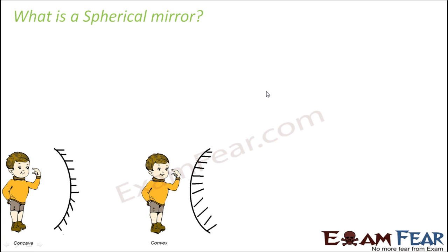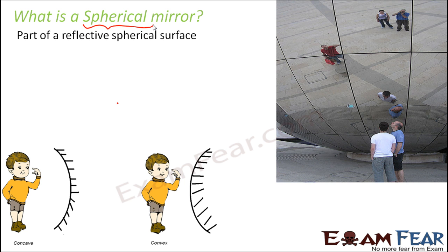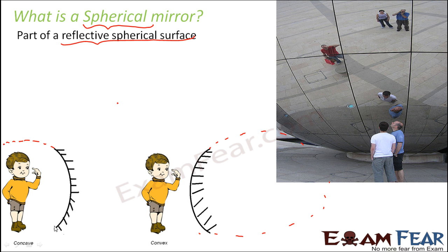So what is a spherical mirror? The word 'spherical mirror' defines itself — spherical means something derived from a sphere. Basically, a spherical mirror is a part of a reflective spherical surface. Imagine a big sphere — a big ball that is completely reflective, shaped like a mirror but not a plane mirror. If you cut a part of this sphere, what you get is a spherical mirror.